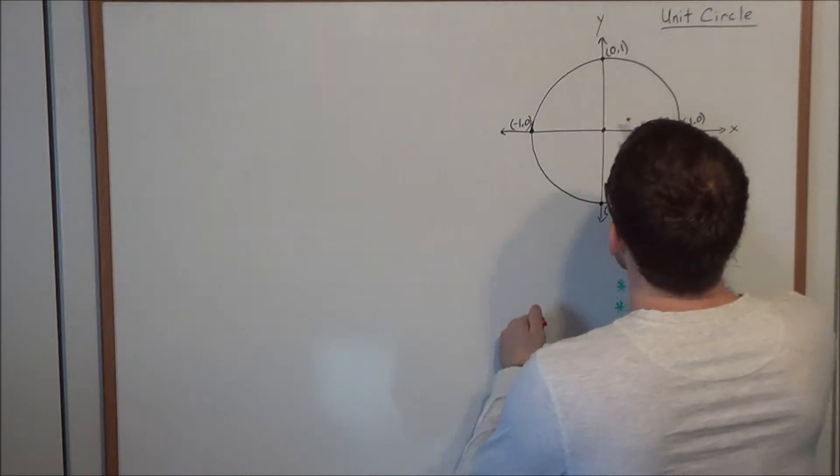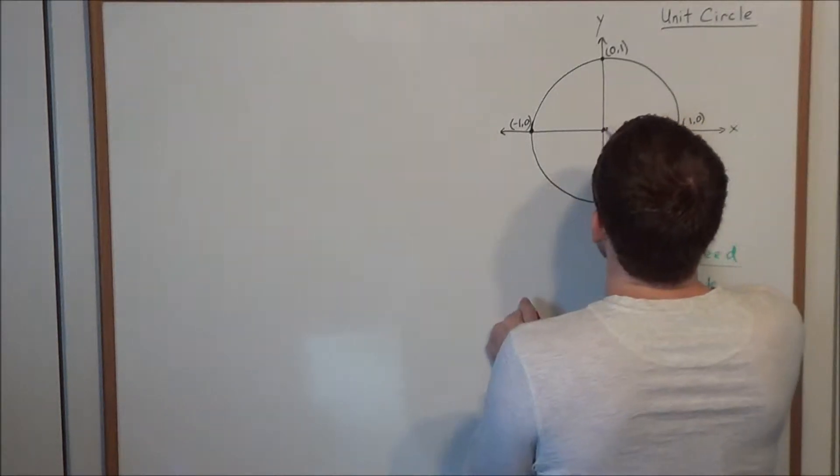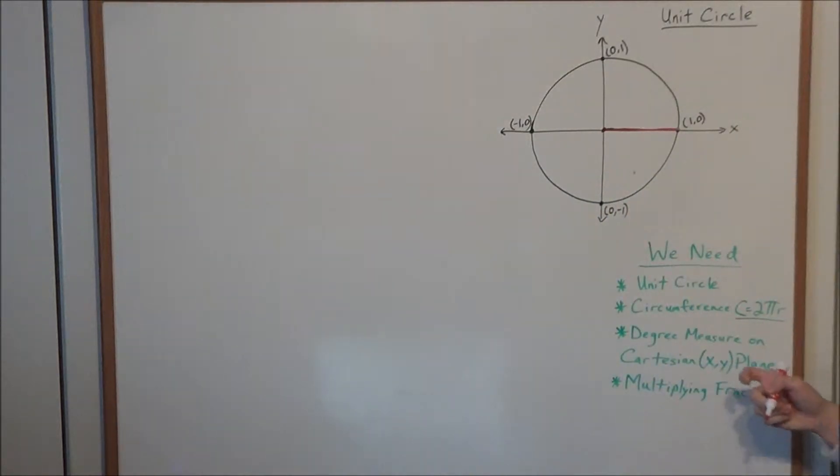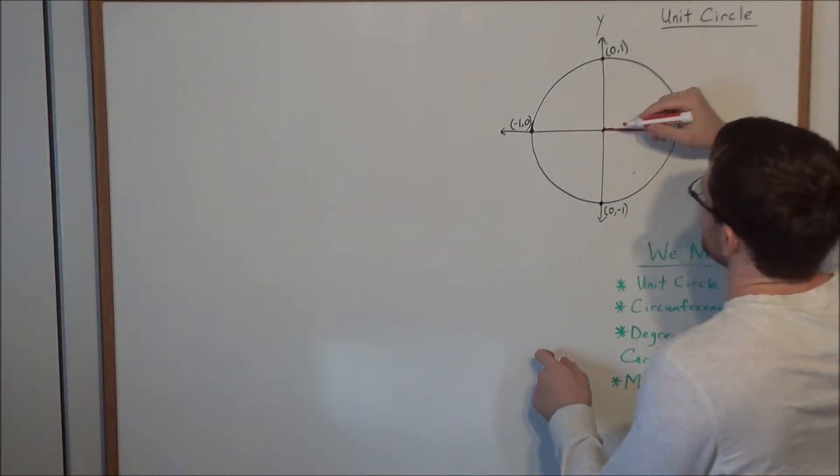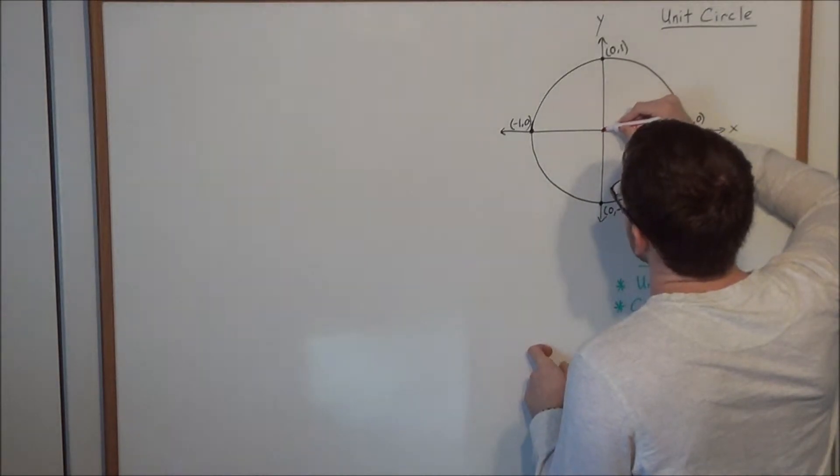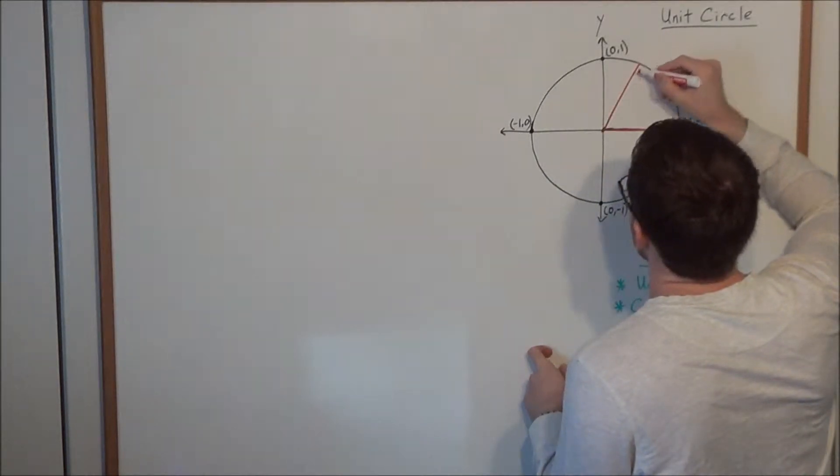Now typically we're used to sketching an angle in degree measure, and the way this works on the Cartesian plane is one of the things we're going to need. When we sketch an angle on the Cartesian plane, we extend out along the X-axis and we spin counterclockwise when we're going in the positive direction. So let's say we go an angle of theta.